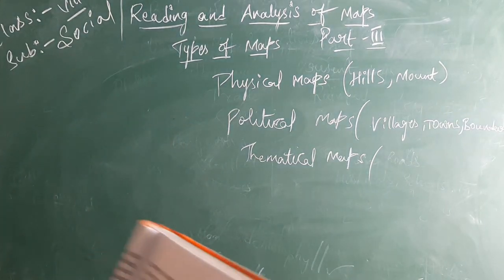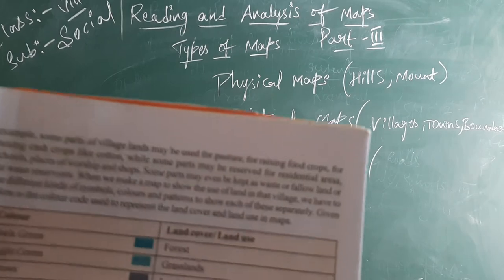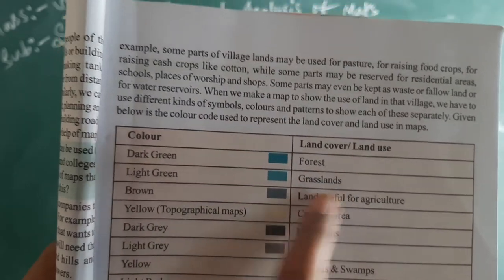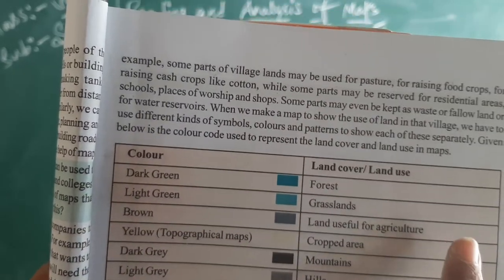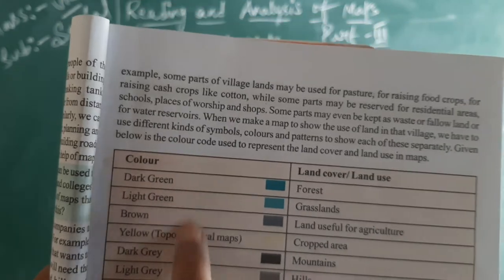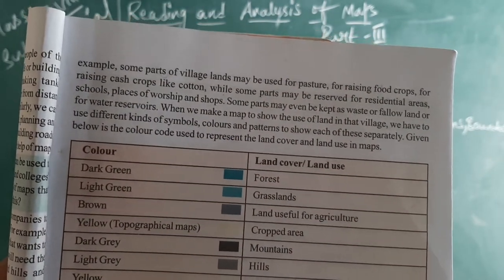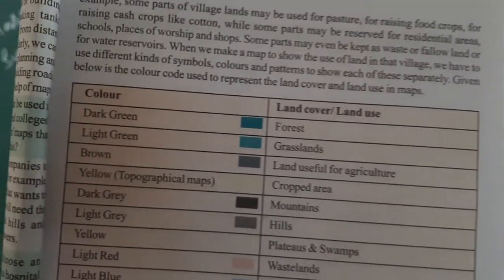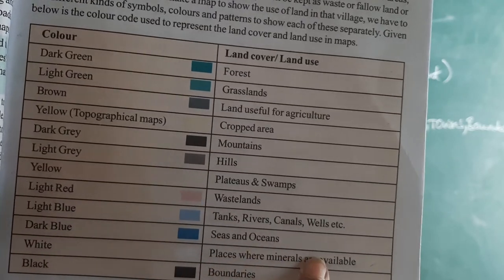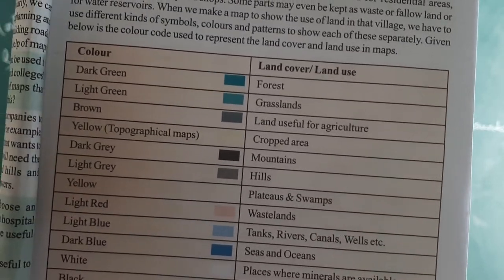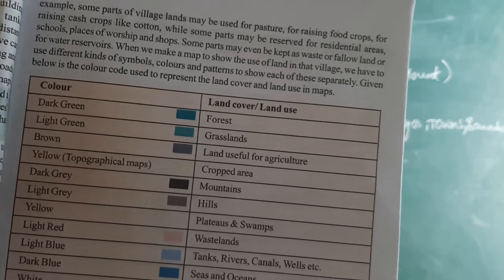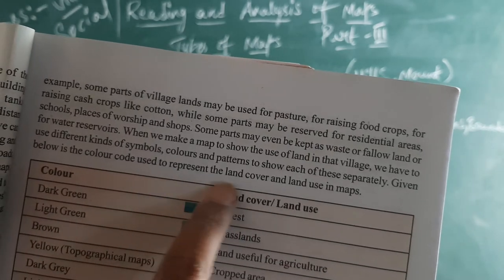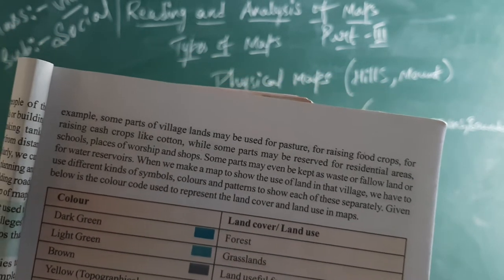Here you can see the color and the land cover. Dark green is forest, light green is grasslands, brown color is land used for agriculture. The light red is wastelands, light blue is rivers, canals, wells, etc. Dark blue is seas and oceans, white is places where minerals are available, black lines are the boundary lines. So, the colors given below represent the land cover and land usage in the maps.